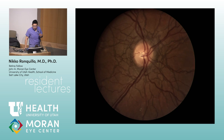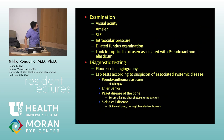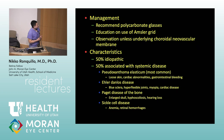Next — angioid streaks. Mnemonic associations: Paget's disease of bone, Ehlers-Danlos, pseudoxanthoma elasticum, sickle cell, and beta-thalassemia. Angioid streaks are breaks in Bruch's membrane, and you worry about choroidal neovascularization. For pseudoxanthoma elasticum, a case may present with GI bleed — think PXE with GI bleed. Von Hippel-Lindau is another systemic condition to remember for GI involvement.